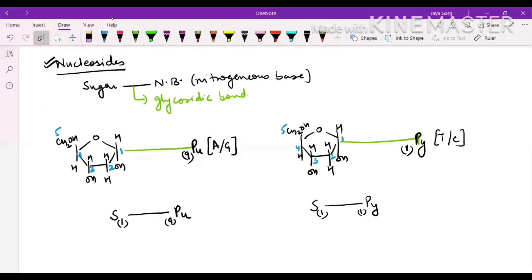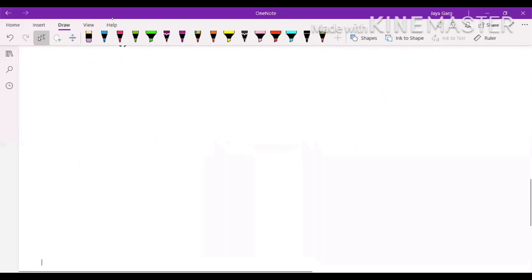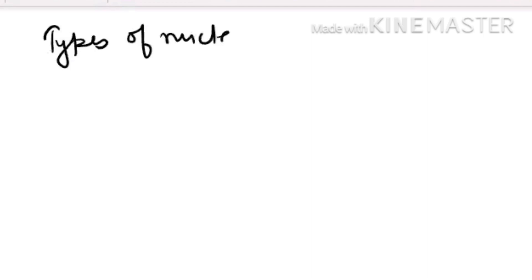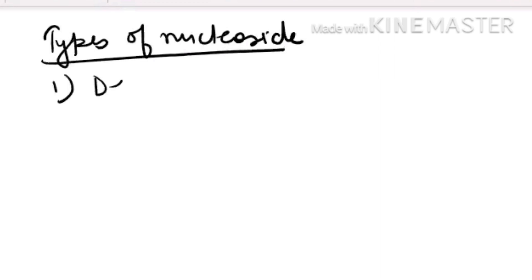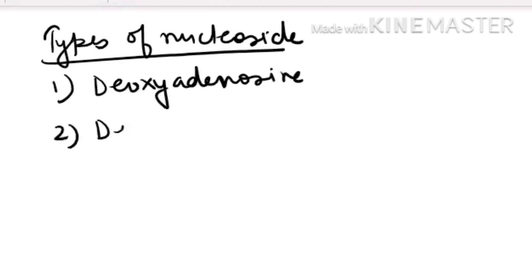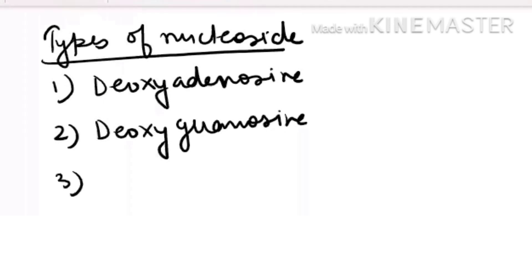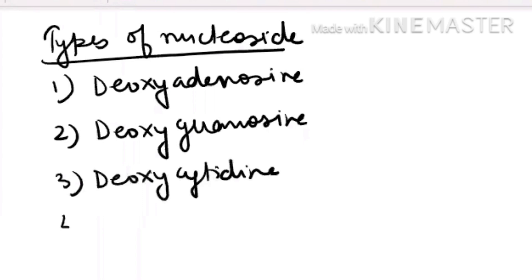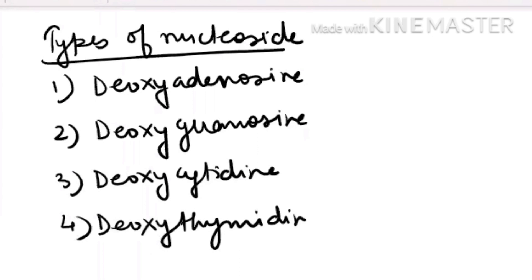The types of nucleosides depend upon the nitrogenous base used. The nucleosides present in DNA are: deoxyadenosine, deoxyguanosine, deoxycytidine, and deoxythymidine.